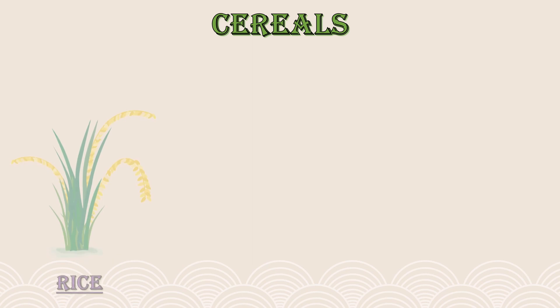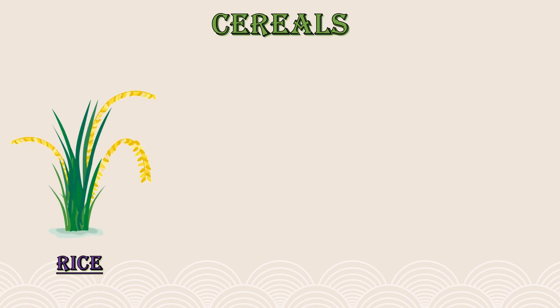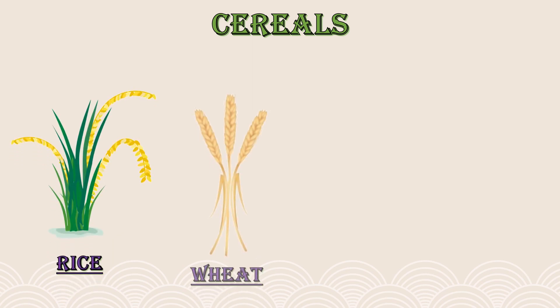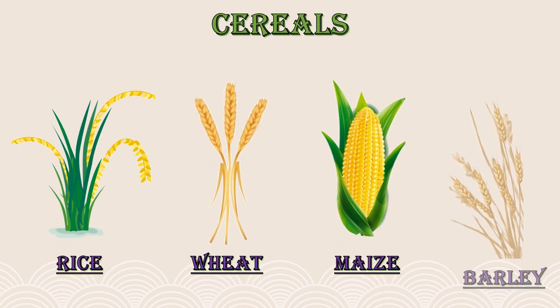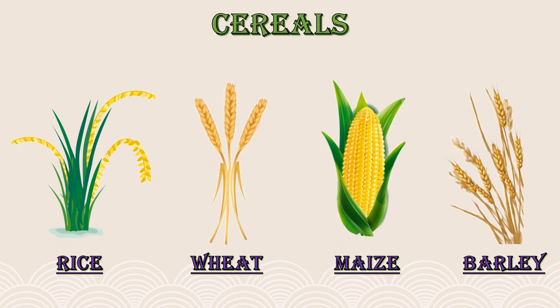The next food item which we get from plants is cereals. For example, rice, wheat, maize, barley, etc. We get cereals from plants. Cereals are the grains that can be eaten. We make chapati from the flour of different cereals.